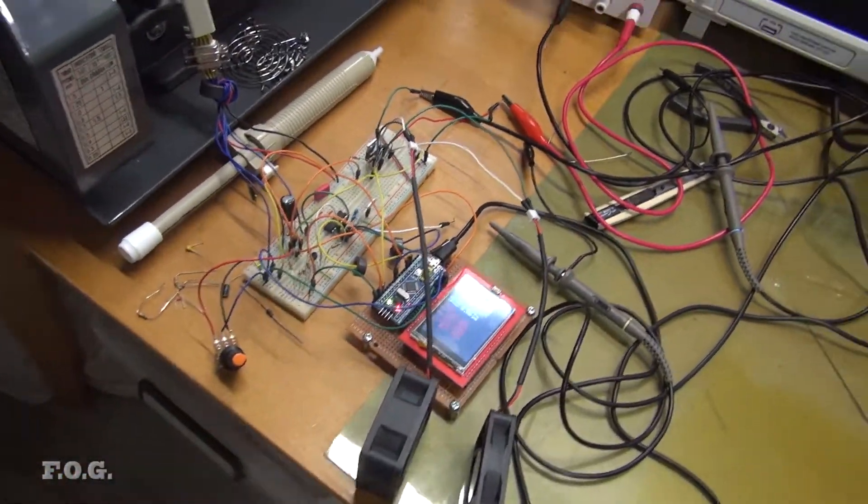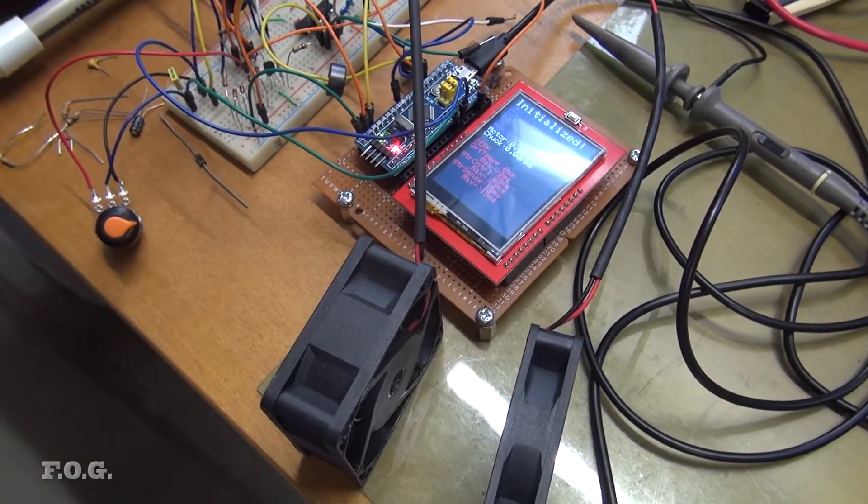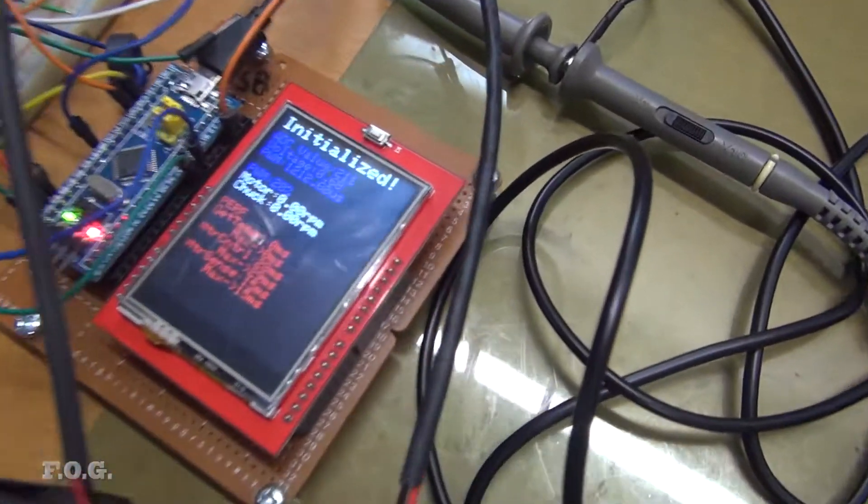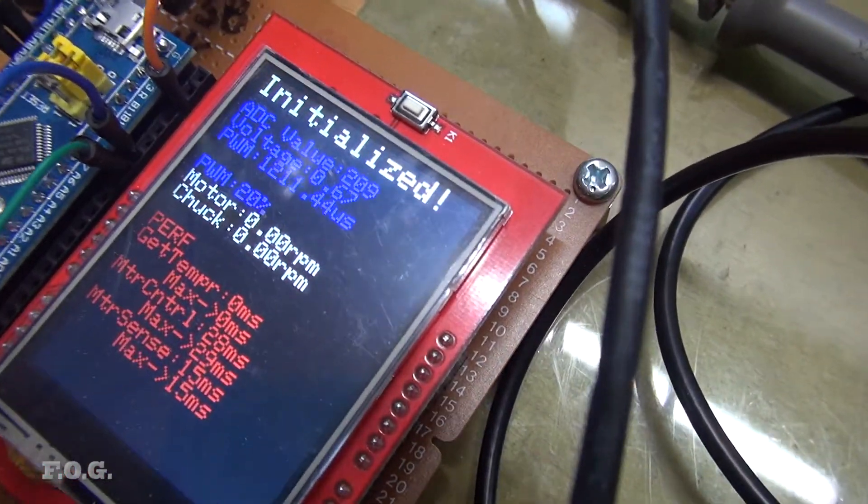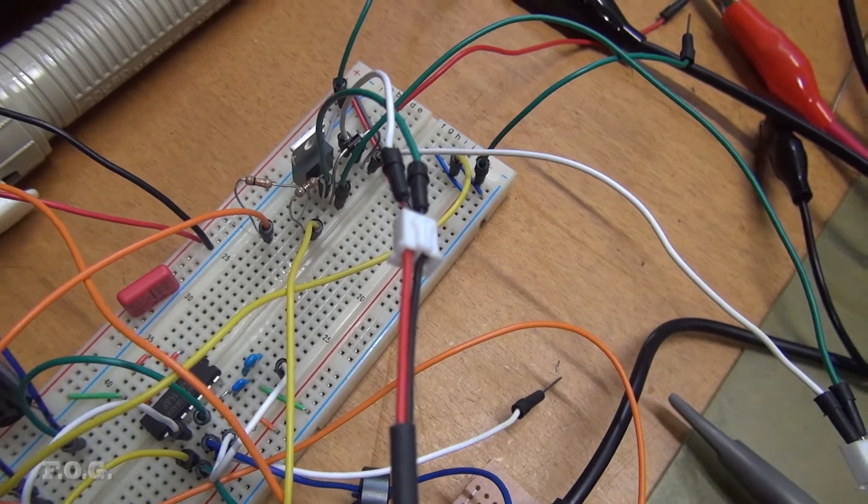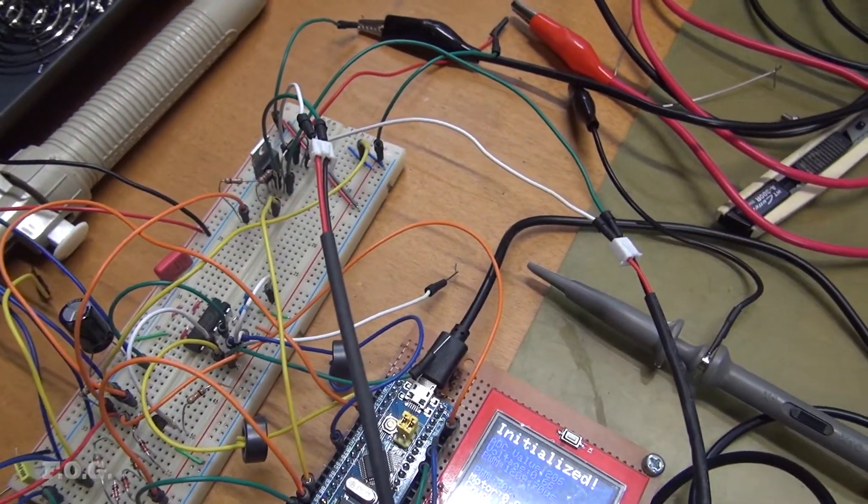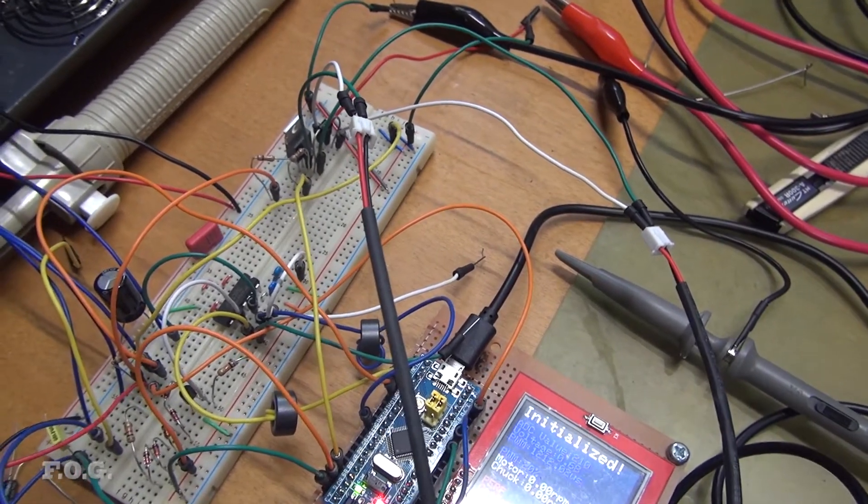To control the fan speed I've come up with a little test setup here just to see how that works. I'm using a PWM type control. Currently I've set it at 20% and I'm just using a single MOSFET to control both of them. I was thinking about putting two MOSFETs in but I think it's not necessary. The current is not all that great, it should be okay.